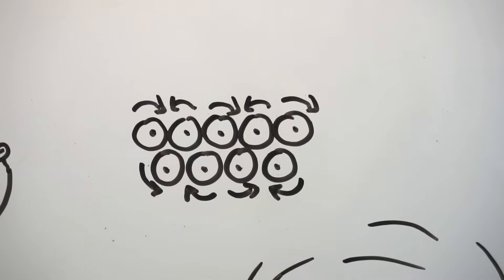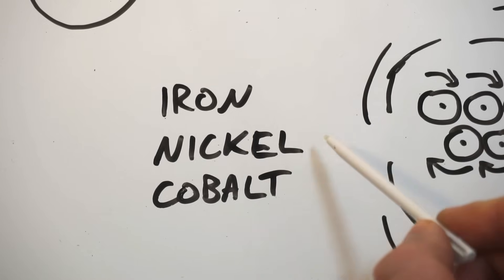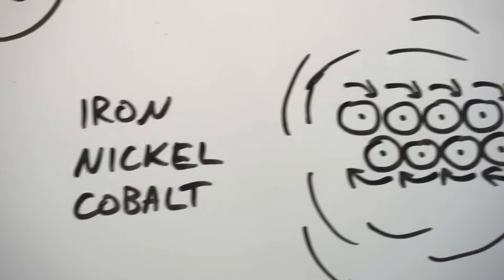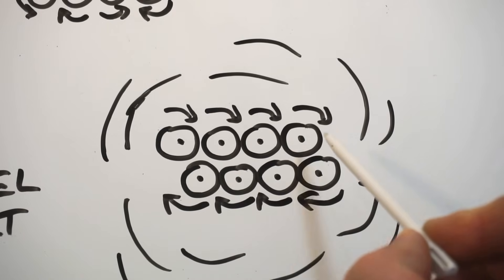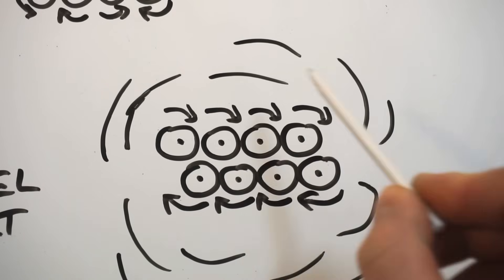However, in some things, specifically things made of iron, nickel, or cobalt, all these electrons fly around the nuclei in the same direction, and this creates an invisible magnetic force field and makes the object magnetic.